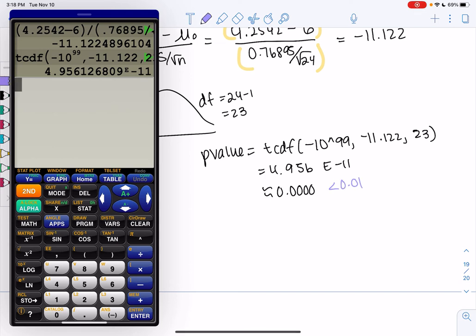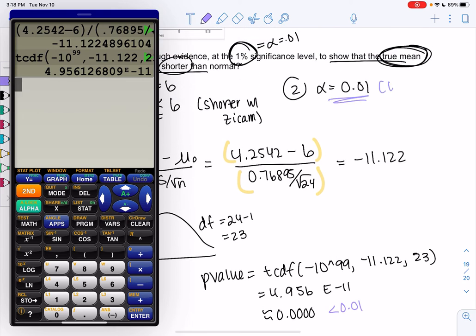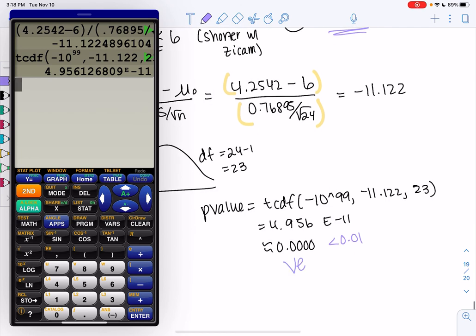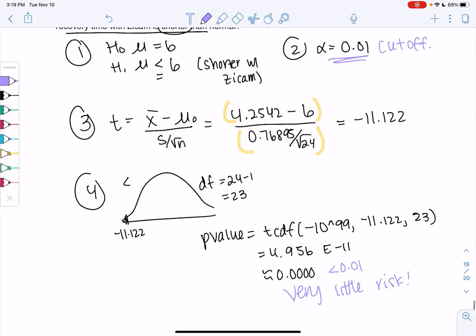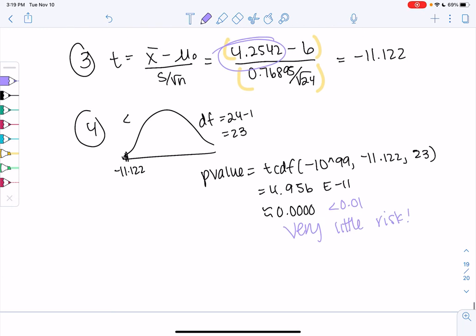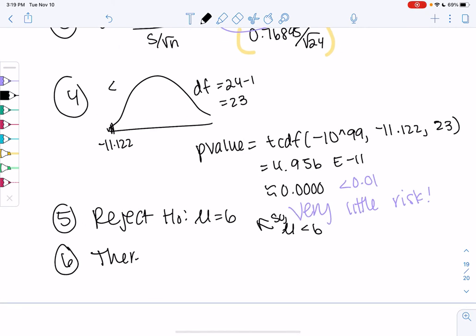Our cutoff was only 0.01 here, but this is way less than 0.01. So the cutoff is not always 0.05. That's just a common one. Very little risk. If the cold was the same on Zycam, it's very unlikely that our sample would be this low. So because it's so unlikely, we're going to go ahead and reject H0. We're rejecting that the mean equals 6, so it must be less than 6. So there's strong evidence to show that a cold is shorter on Zycam. And I'm going to add at 1%.